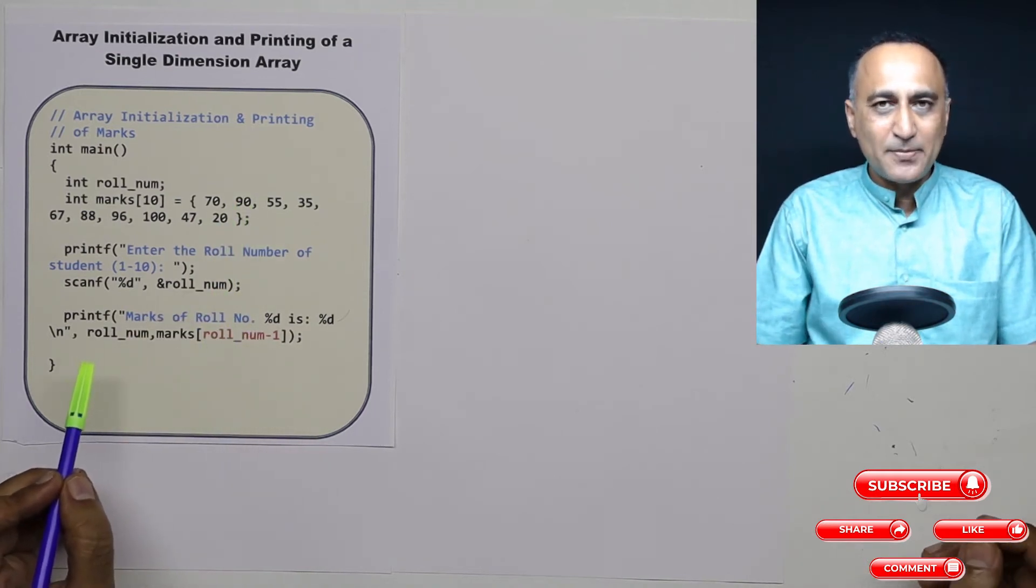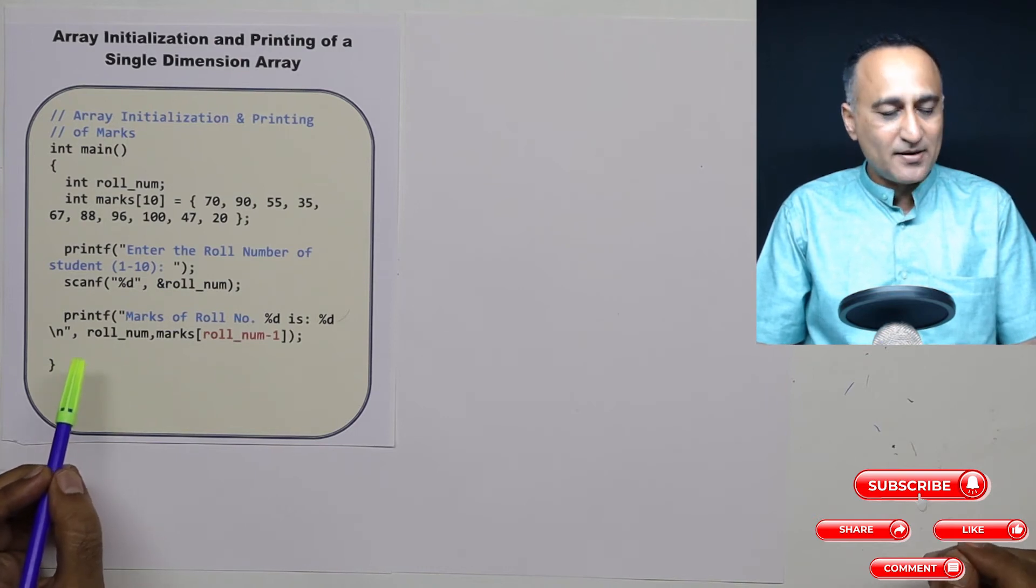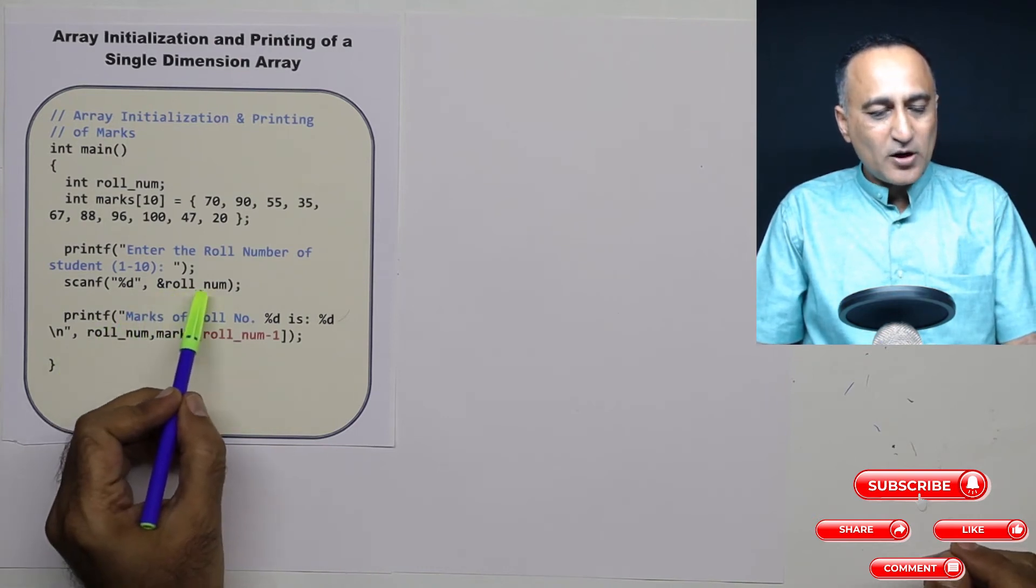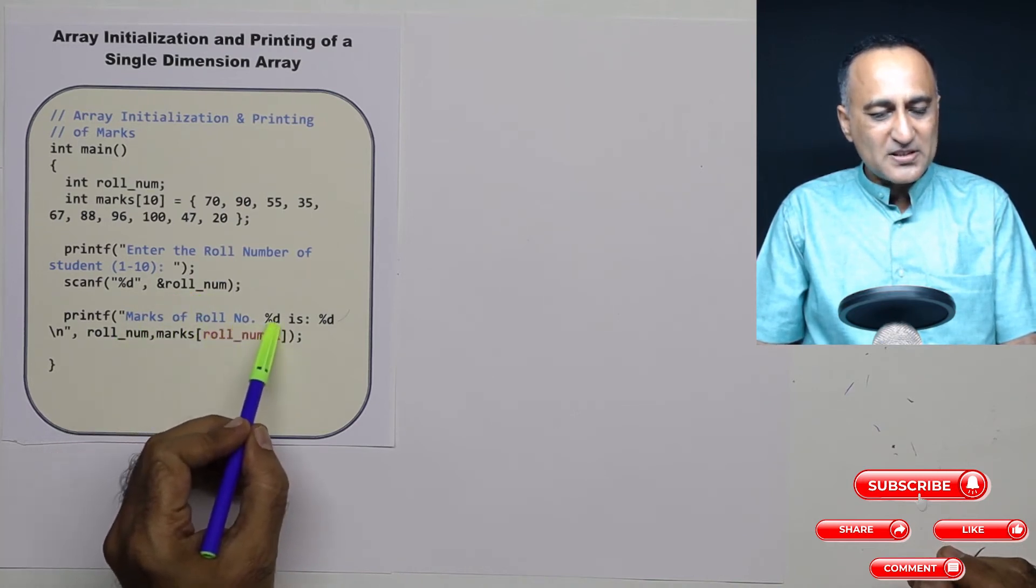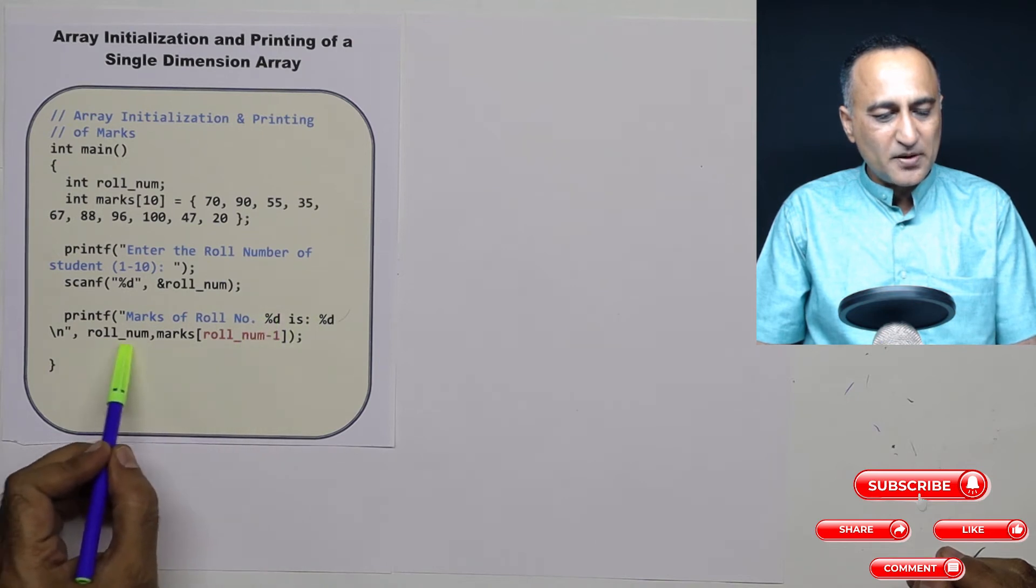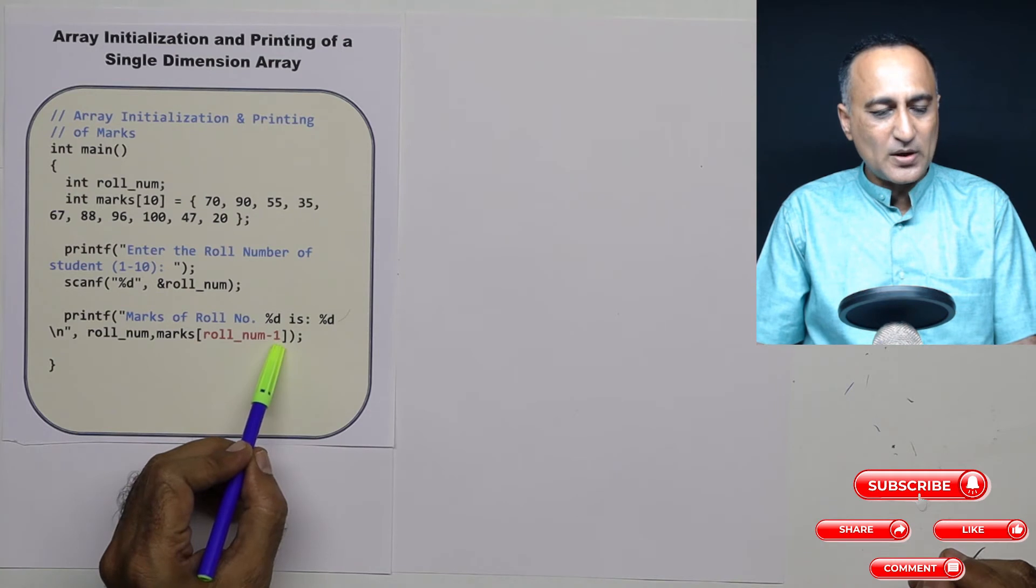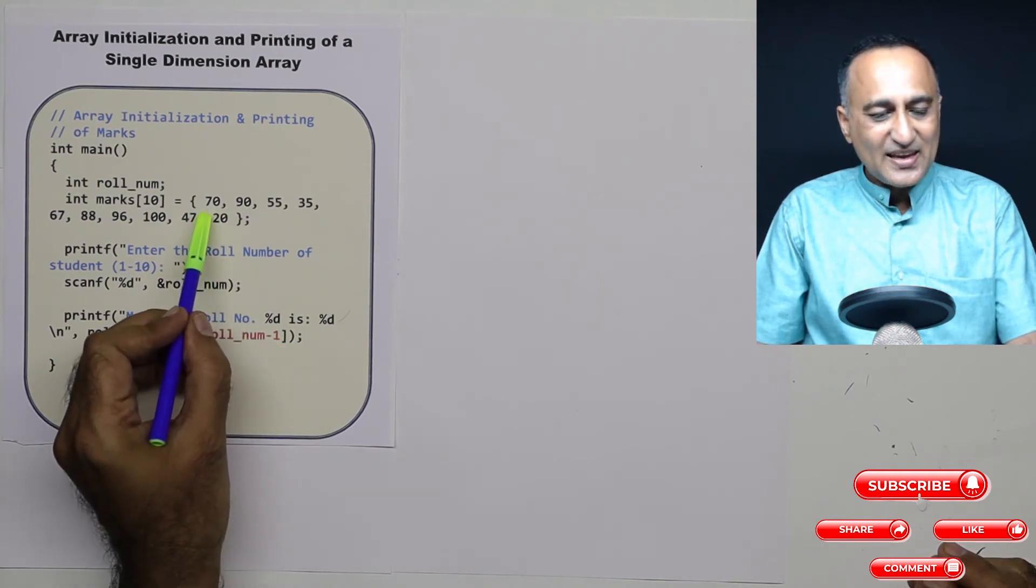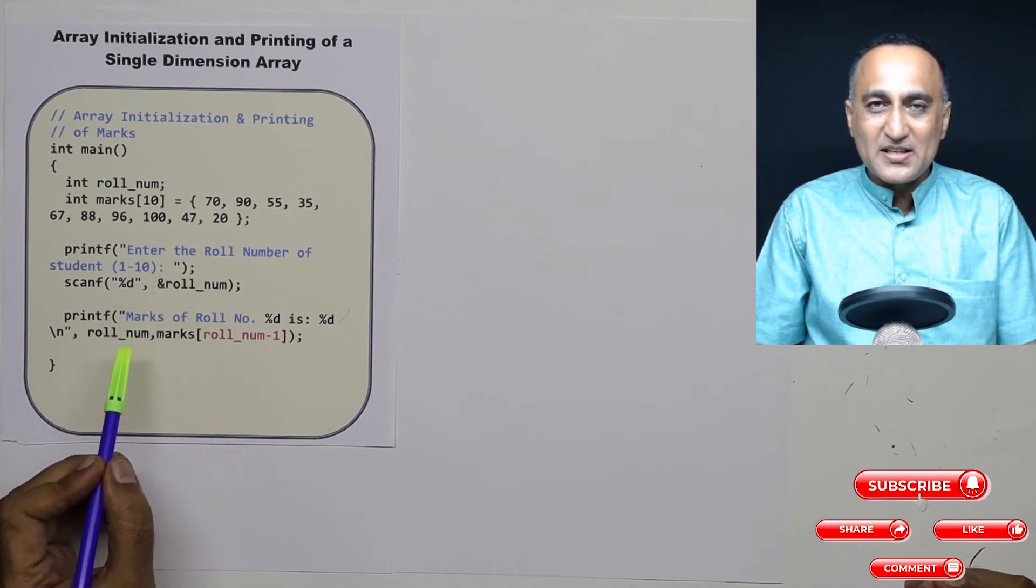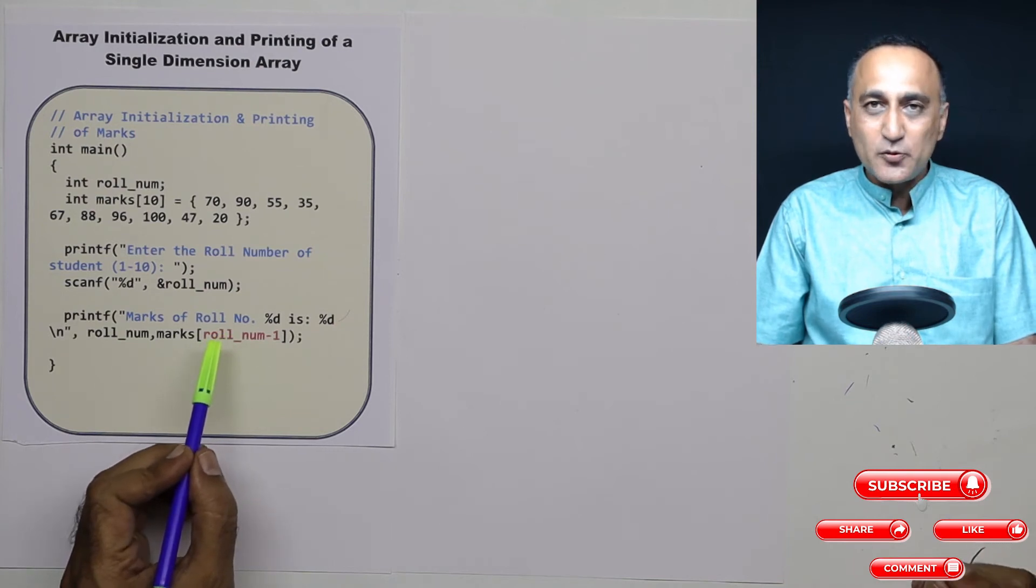Let me take one more example. Let's say I want to find the marks of roll number 10. So I read the roll number as 10. So I say marks of roll_num %d %d. The first %d is going to print the roll number. Marks of roll_num minus 1. Roll number is 10. This array has only elements starting from subscript 0 till 9. There is nothing called 10.